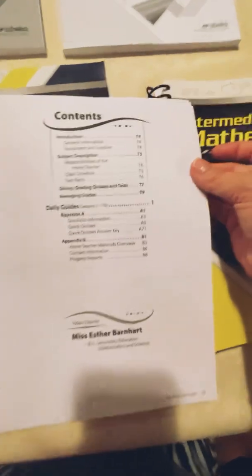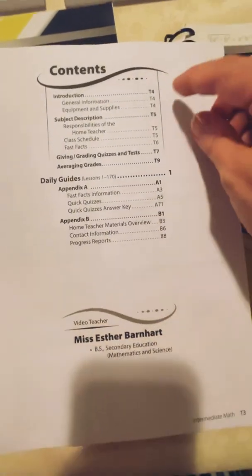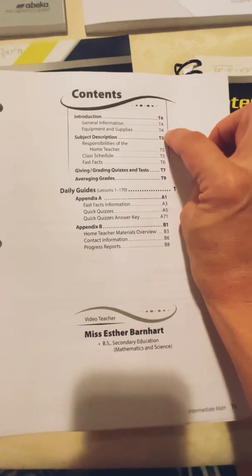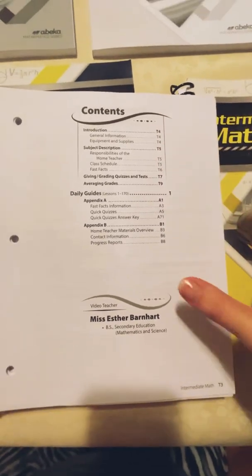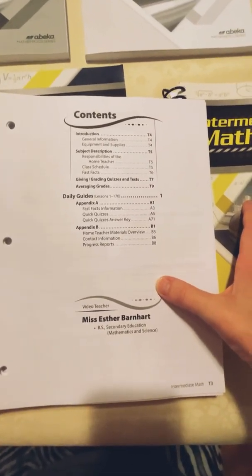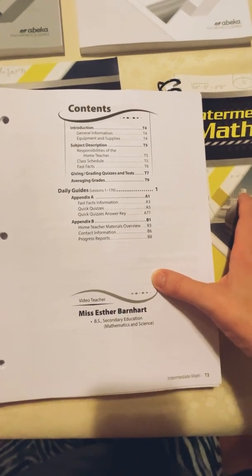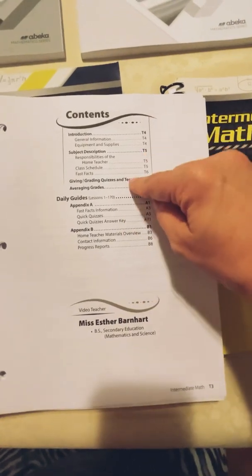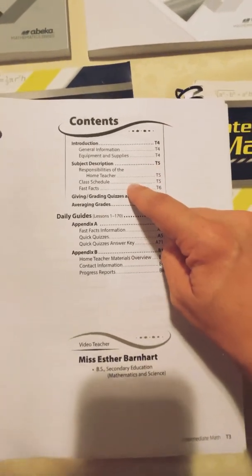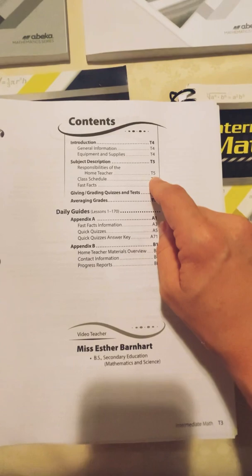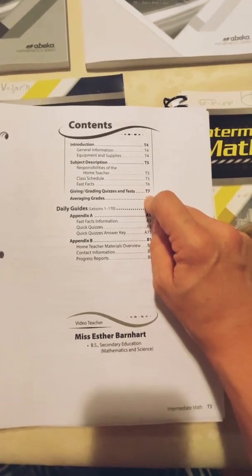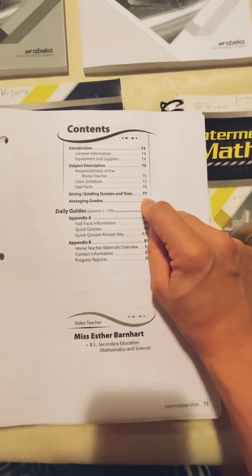Here's the table of contents. This gives you an idea for information, what supplies you'll need. Abeka also has a supply list on their website for their math course—you will need a protractor and things like that and they'll give you that list if you go to their website. It gives you the responsibilities of being the home teacher, the class schedule that you can use or not use, whatever floats your boat, how to give and grade the quizzes.